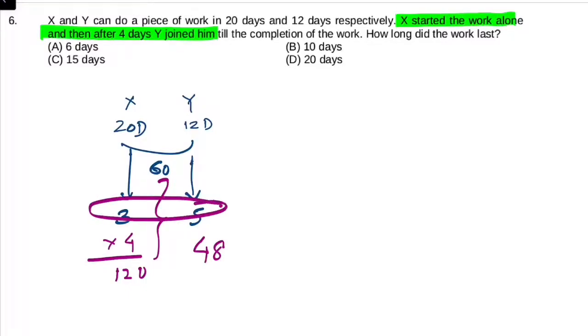Ab dono milke kaam karenge, to dono ki work efficiency kitni ho jayegi? 8 units. To 48 units kaam karne mein 8 units ke rate se total time kitna lagega? 6 days.